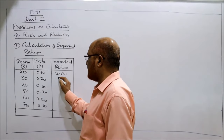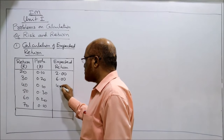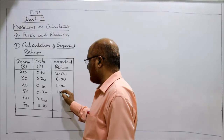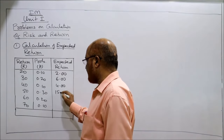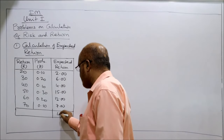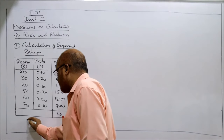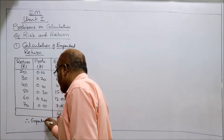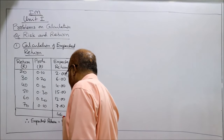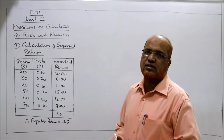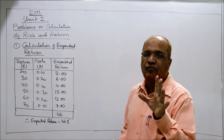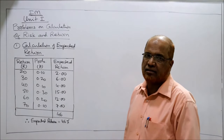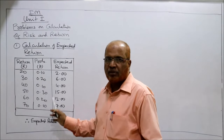Similarly: 30 × 0.2 = 6; 40 × 0.1 = 4; 50 × 0.3 = 15; 60 × 0.2 = 12; 70 × 0.1 = 7. The total is 46. Therefore, expected return = 46. That's the first problem on calculating the return — specifically ex-ante return, future return, called expected return. Multiply the return with the probability and take the total. Now second problem.